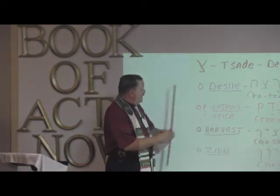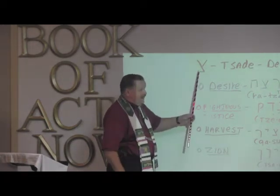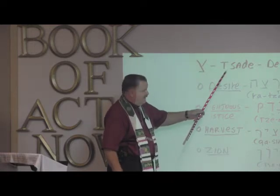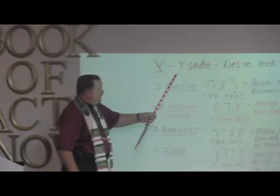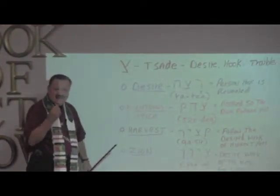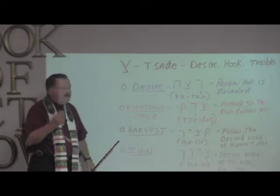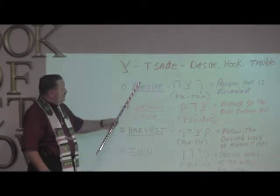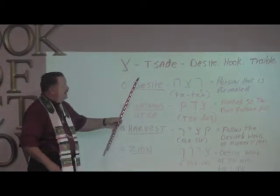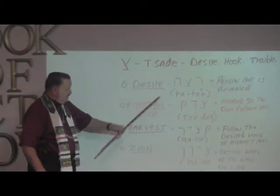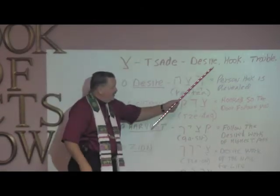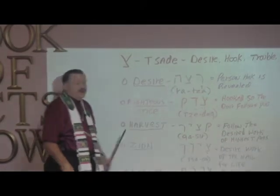Today, this looks a little like a vav with a tail on it. This is Tsadi. The T-S here is like pizza — it's unique in its sound. Tsadi means desire, hurt, or trouble.